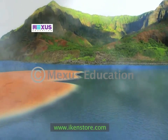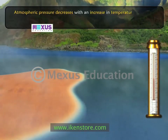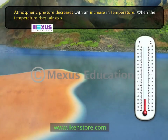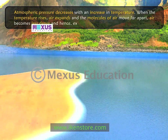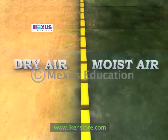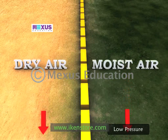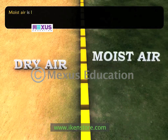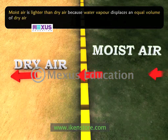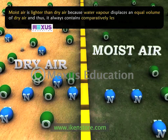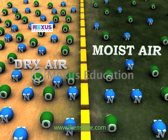The second factor that affects atmospheric pressure is temperature. Atmospheric pressure decreases with an increase in temperature. When the temperature rises, air expands, and the molecules of air move far apart. Air becomes less dense and hence exerts less pressure. Water vapour also affects atmospheric pressure. Moisture exerts less pressure than dry air. Moist air is lighter than dry air, because water vapour displaces an equal volume of dry air, and thus it always contains comparatively less nitrogen and oxygen than dry air, and is lighter. Hence, it exerts less pressure.